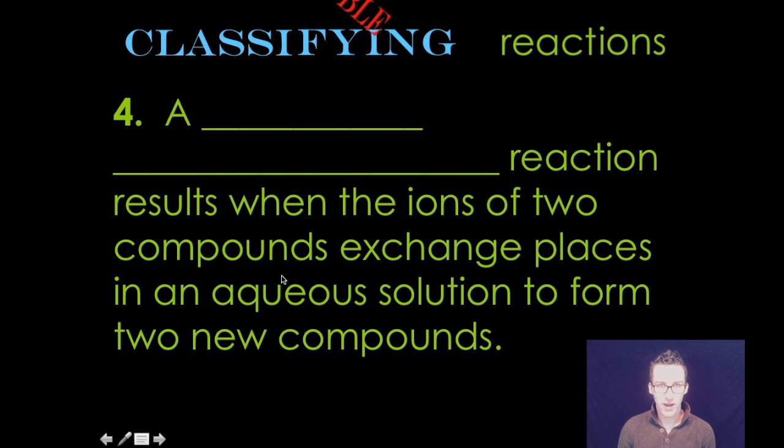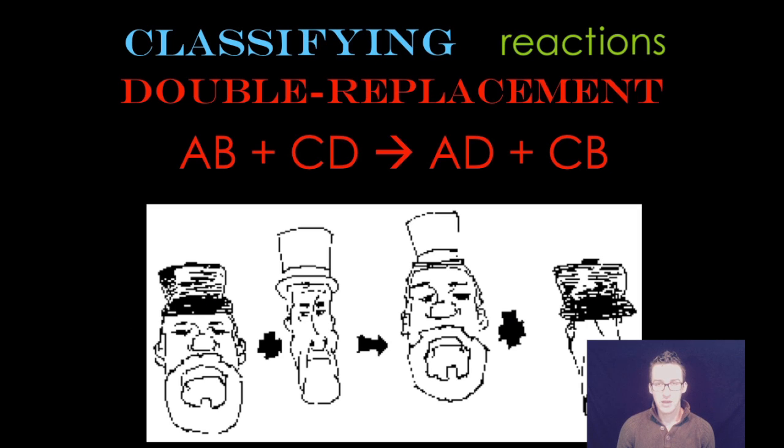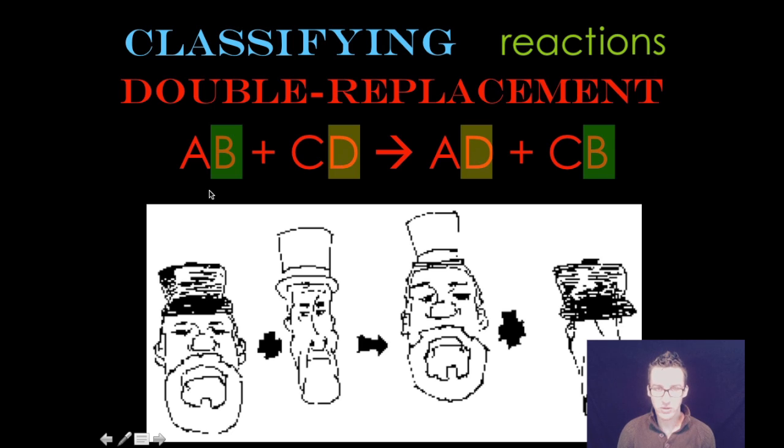Reaction type number four. A double replacement reaction results when the ions of two compounds exchange places in an aqueous solution to form two new compounds. So we're talking about when we've dissolved two things in water. A great way to understand double replacement reactions is to think of these gentlemen and their hats.